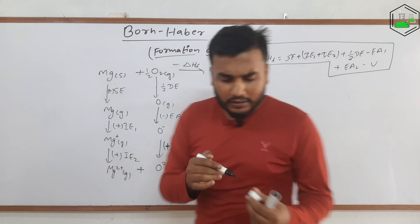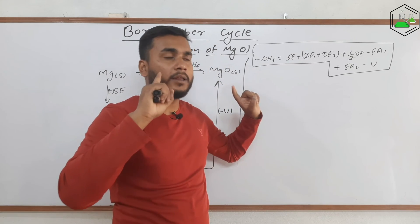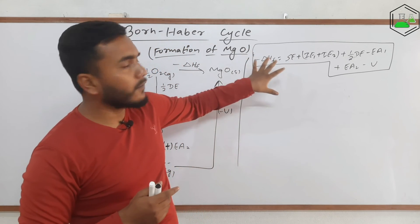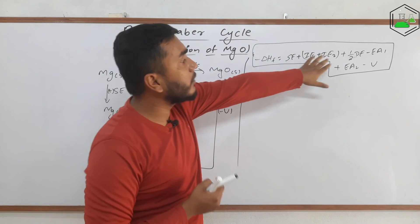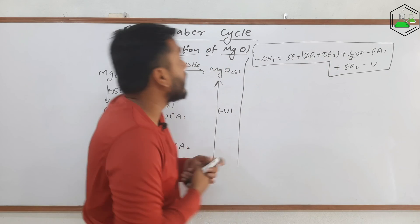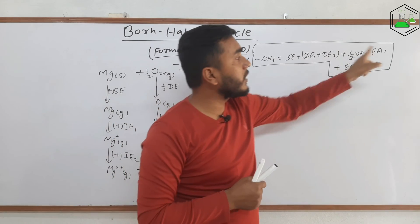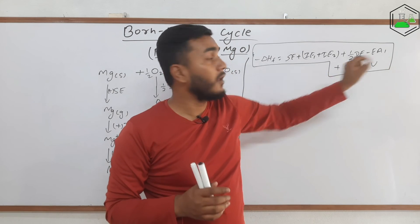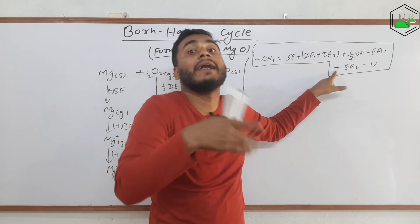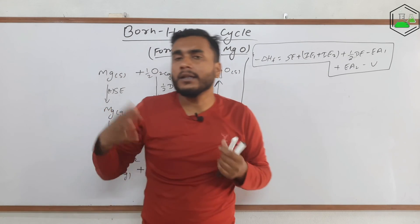Now in this case also all the energy terms will be given except for one energy term and you have to be very much careful. EA1 and EA2. If in the examination this question is given, be very much careful. Not all the electron affinity is subtracted, second electron affinity will be added, so be very much careful. This is a little bit different than the other examples.